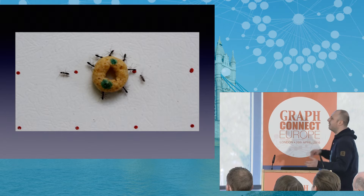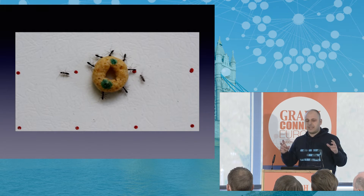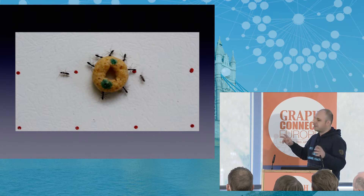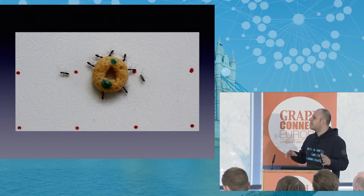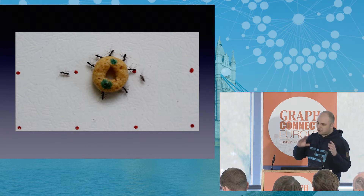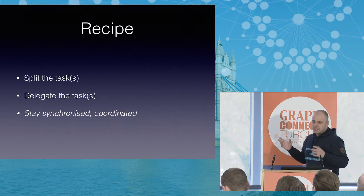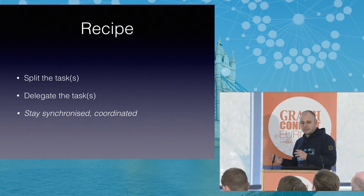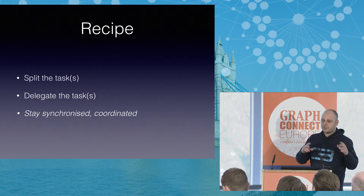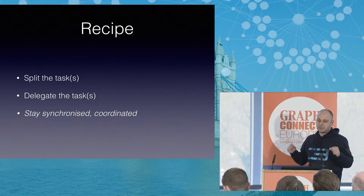So how did they do it? What's the trick? These ants had a task to bring the breakfast cereal home, and each one of those ants had a subtask assigned to it — some were pushing, others pulling, others were scouting. So what's the recipe? The recipe is: first split the task, then delegate the task. But as I said, the ants weren't moving in the right direction. They needed a scout to show them the way.